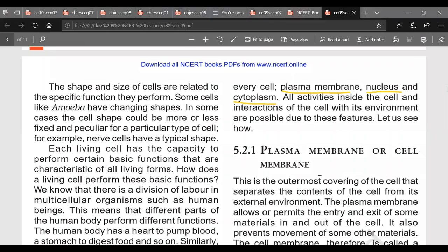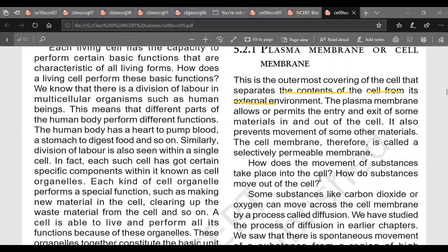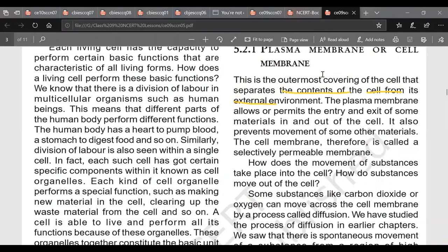Now we come to plasma membrane or cell membrane. Plasma membrane or cell membrane, this is outermost covering of cells. This is the outermost covering which separates the content of the cell from external environment. So it maintains identity or individuality of the cell.